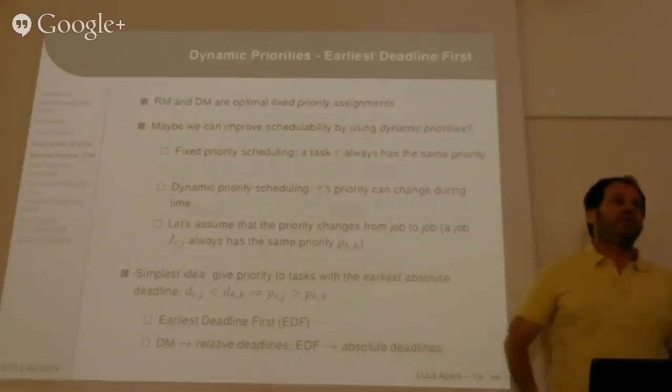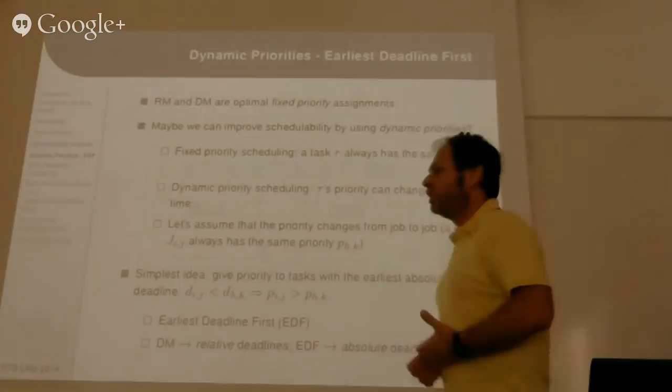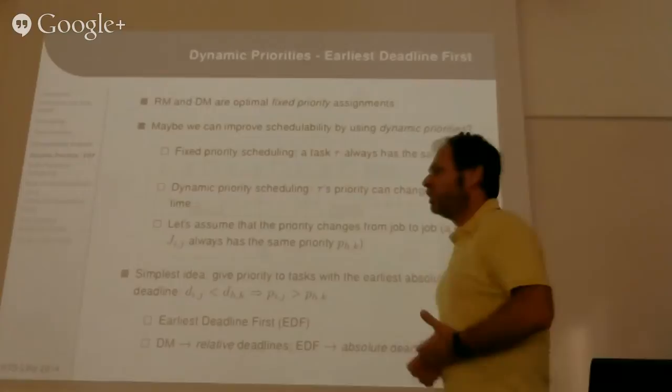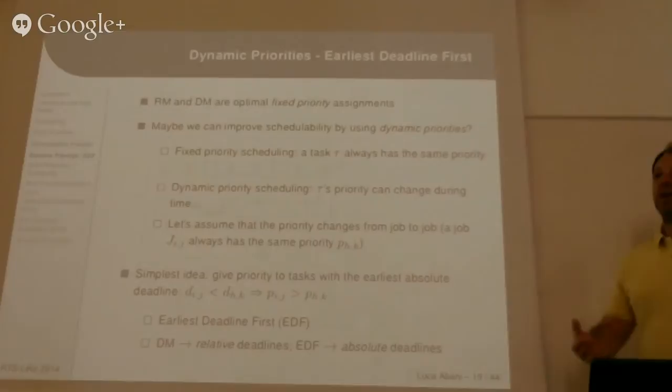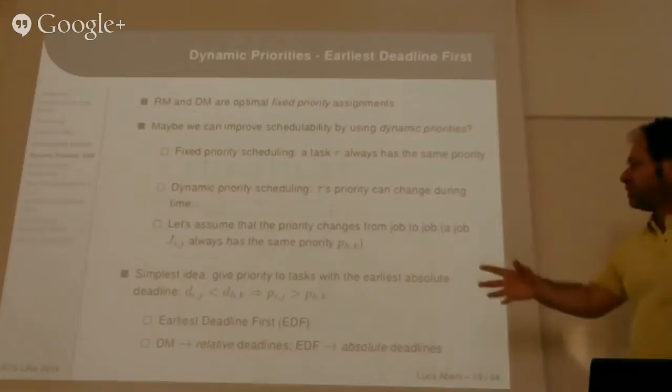So this was about fixed priority scheduling. If the system utilization is not too high and we limit ourselves to single processor systems, we can use fixed priorities. There are a lot of real-time operating systems which work fine with fixed priorities. But can we do something better? We can try to use dynamic priorities — dynamically changing the priority.